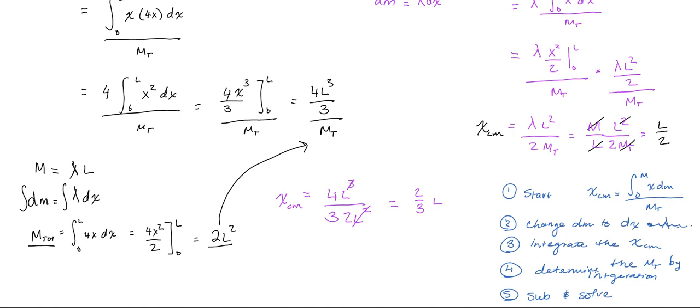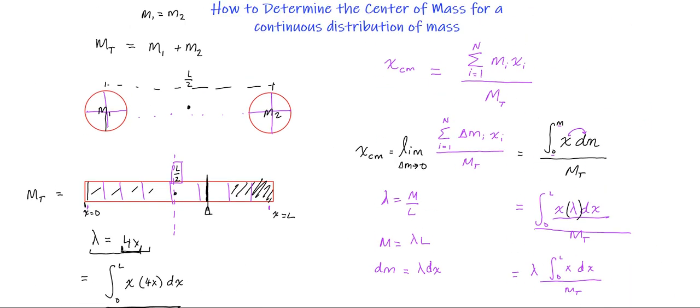That's the general solution to most of these problems. Start with my equation, change dm to dx using the density equation, integrate this function, realize I need to simplify by finding the expression for total mass by integration because I have a non-uniform density, and then I can substitute and solve. Remember, these steps are for a non-uniform density. If it is uniformly dense, this is not necessary. Hopefully that's starting to help you see how calculus can be used in such a practical way to find where the center of mass is when you have continuous distributions rather than discrete mass points in a system.